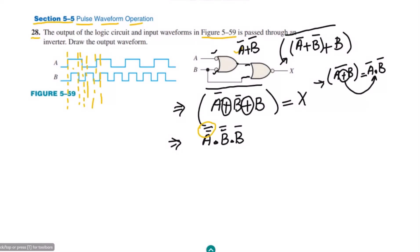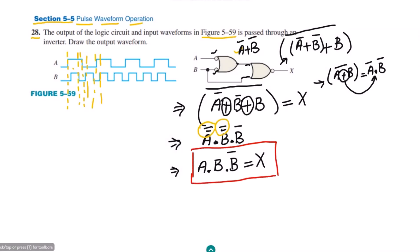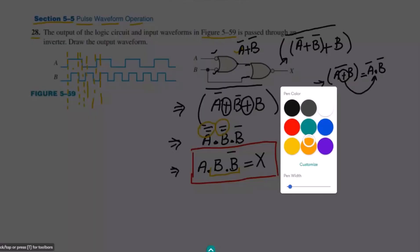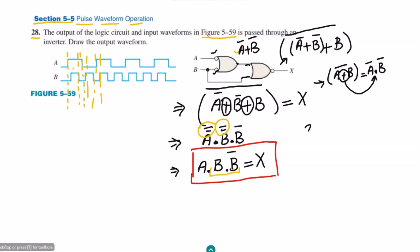We can see that complement of A complement — the two complements cancel each other — so complement of A complement is simply A. Similarly, complement of B complement is B. So we get X equals A · B · B'. According to Boolean algebra, X · X complement is always equal to 0. So B · B' equals 0, giving us A · 0, which equals 0. That is the value of X.